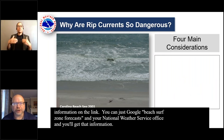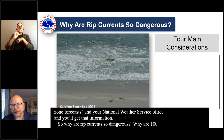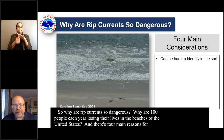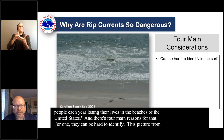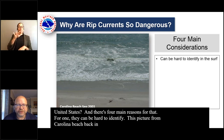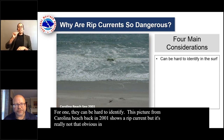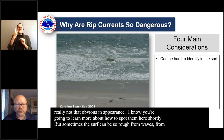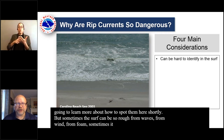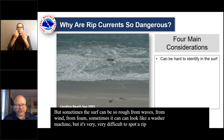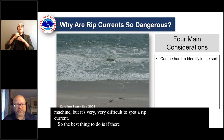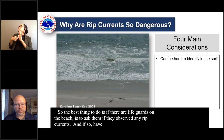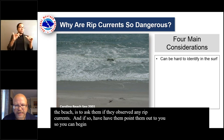So why are rip currents so dangerous? Why are 100 people each year losing their lives at beaches in the United States? There are four main reasons. First, they can be hard to identify. A photograph from Carolina Beach in 2001 shows a rip current, but it's really not that obvious in appearance. Sometimes the surf can be so rough from waves, wind, and foam that it looks like a washing machine and it's very difficult to spot a rip current. The best thing is if there are lifeguards on the beach, ask them if they've observed any rip currents and have them point those out to you so you can begin to learn what they look like.